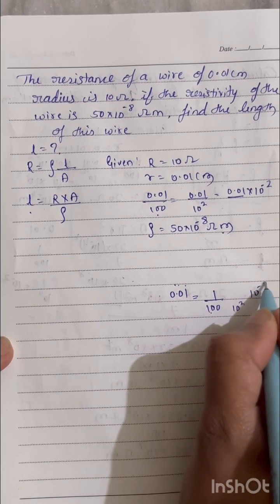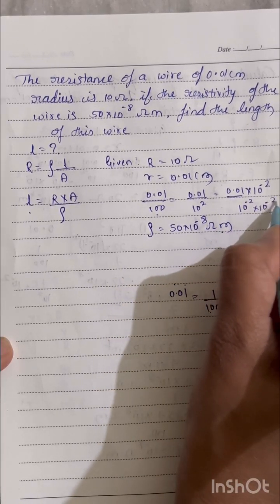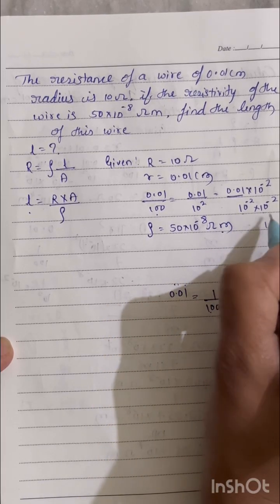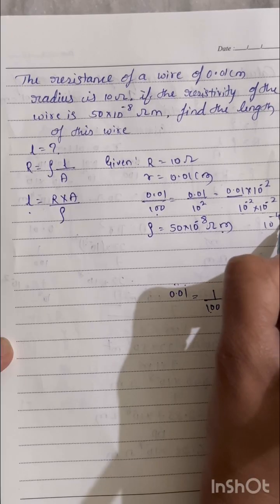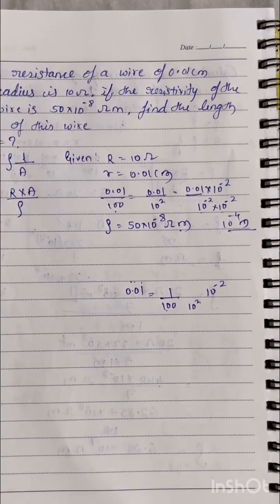Now this again 100 I can write as 10 power 2. When I shift to the numerator it will become minus 2. So I'm just writing here directly 10 power minus 2 into 10 power minus 2. The bases are same, 10 and 10, so we can just add up, so I'll get minus 4. Radius I got 10 power minus 4 meter.